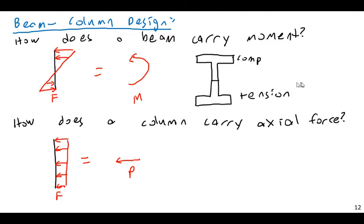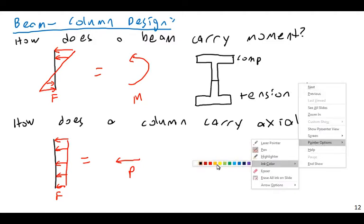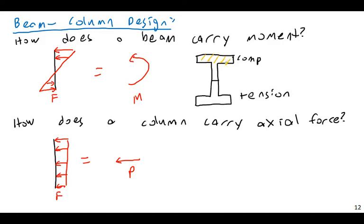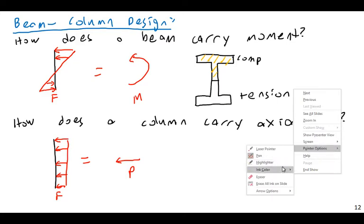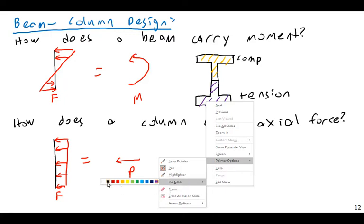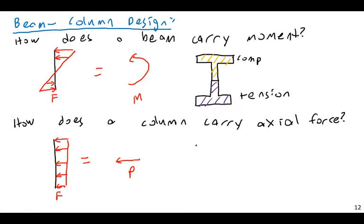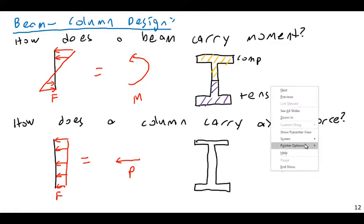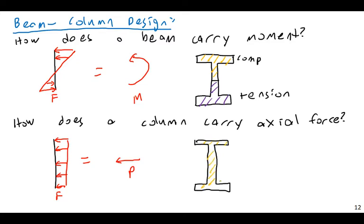But then looking at this in terms of the cross-section, I would have something like this. Let's say this is the neutral axis here. I'm going to do compression in orange and tension in purple. And this particular member, assuming everything here was compression, the entire cross-section will be in compression. So that would be entirely orange.